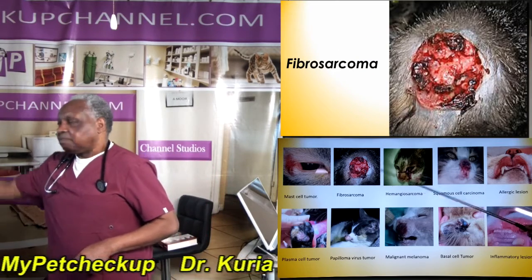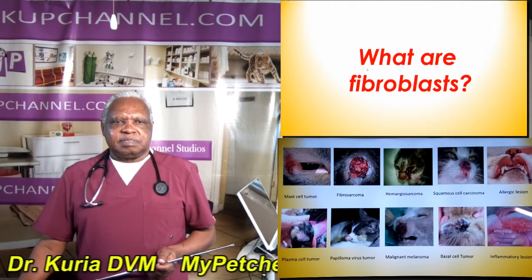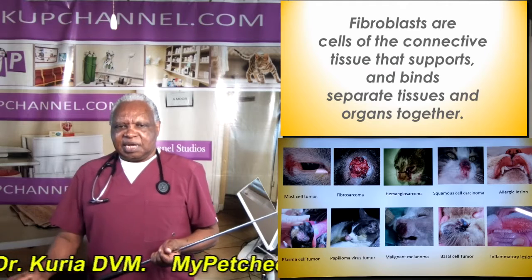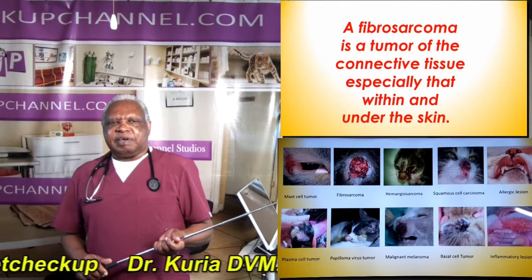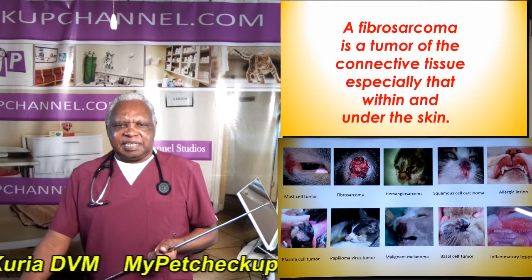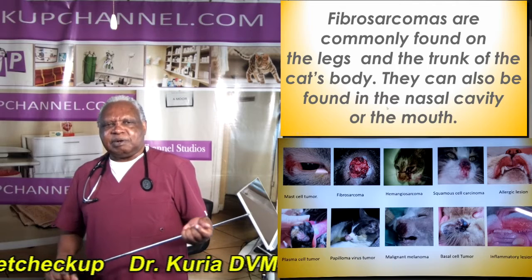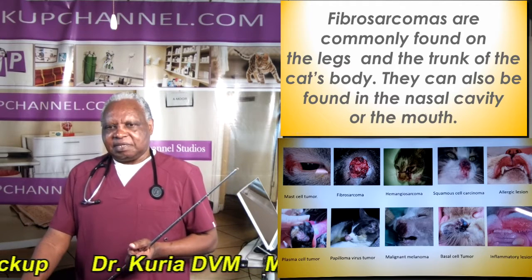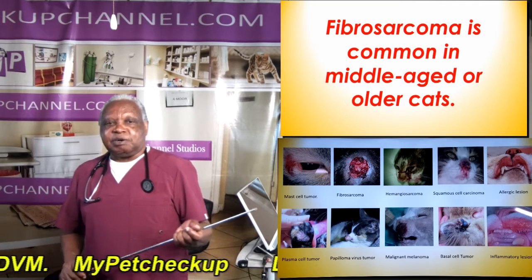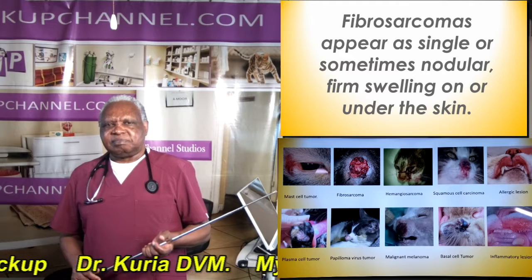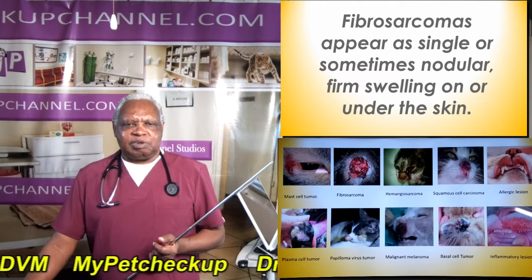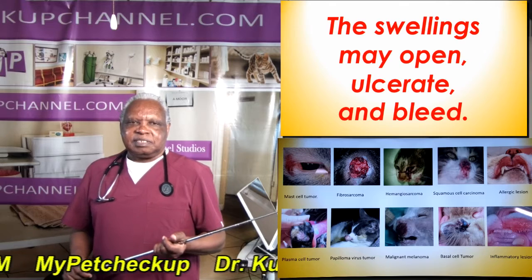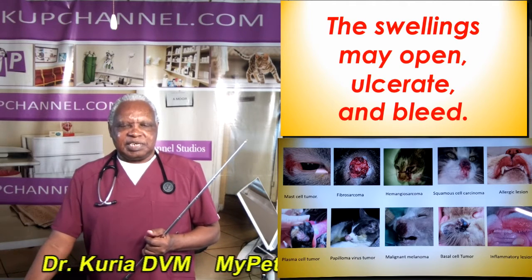Fibrosarcoma — right here. What are fibroblasts? Fibroblasts are cells of the connective tissue that support and bind separate tissues and organs together. A fibrosarcoma is a tumor of the connective tissue, specifically that within and under the skin. Fibrosarcomas are commonly found on the legs and the trunk of the cat's body. They can also be found in the nasal cavity or mouth. Fibrosarcoma is commonly seen in middle-aged cats. Fibrosarcomas appear as single or sometimes nodular firm swellings on or under the skin, and the swelling may open, ulcerate, and bleed.